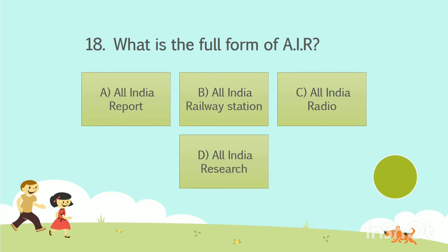To the 18th question now. What is the full form of AIR? Option A: All India Report. Option B: All India Railway Station. Option C: All India Radio. Option D: All India Research. Your time starts now. The answer is Option C, All India Radio.